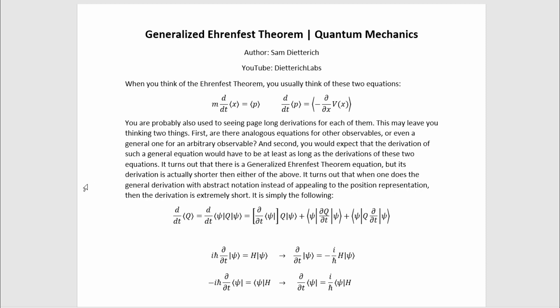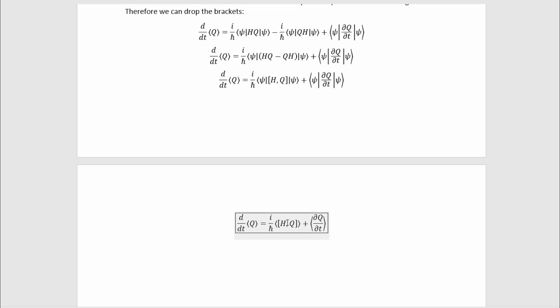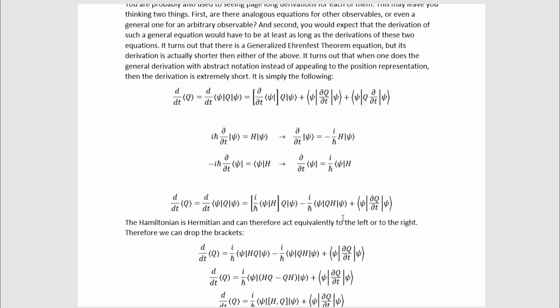It turns out that when one does the general derivation with abstract notation instead of appealing to the position representation, which you typically do when you're handling these equations, the derivation is actually extremely short. It's just this plus this last equation that's the final result that got pushed onto the next page, unfortunately.